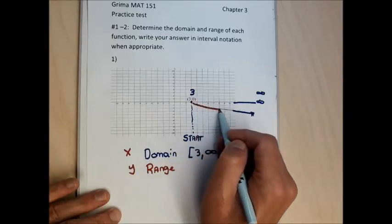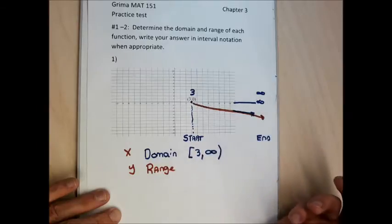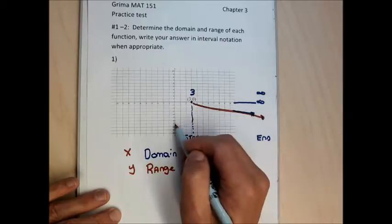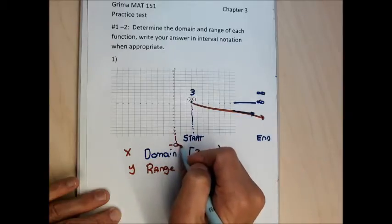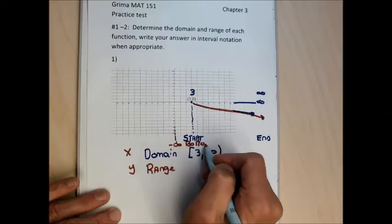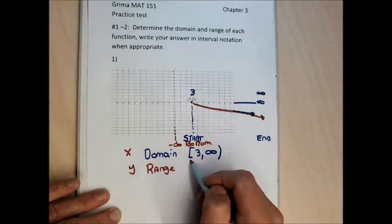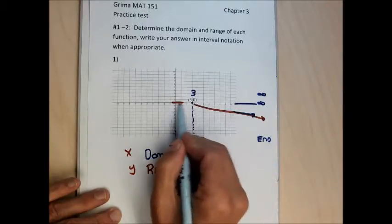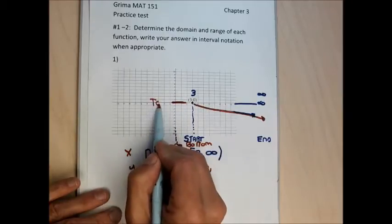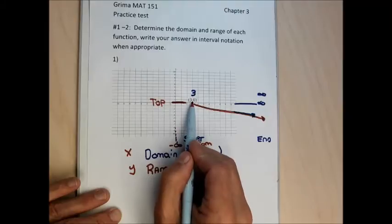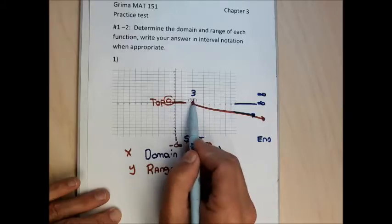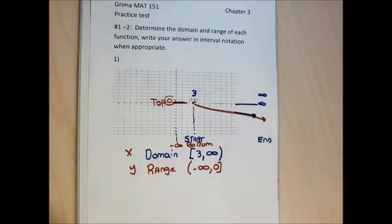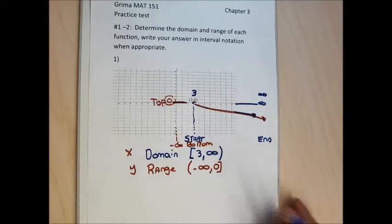For the range, I'm looking for y-values instead of x-values. The domain is x's; the range is y's. I need the y-coordinate of the bottom and top of the graph. This graph goes down forever, so the bottom has a y-coordinate of negative infinity. I start the range at negative infinity with a round bracket. The range ends at the top of the graph — the point (3, 0) is both the left edge and the top, with a y-coordinate of 0. So the range is negative infinity to 0, with a round bracket on the infinity and a square bracket on 0.